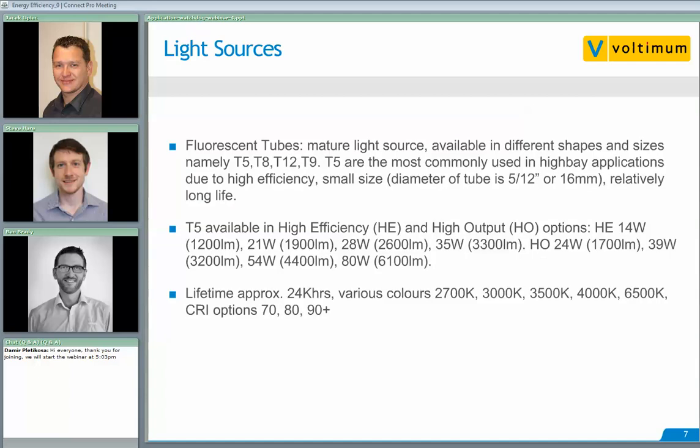The next light source is fluorescent tubes — also a mature light source available in different shapes and sizes, mainly T5, T8, T12, and T9 circular types. T5 are the most commonly used in high bay applications due to their high efficiency, relatively small size — diameter of about 16mm — and relatively long life. T5 are available in high efficiency (HE) and high output (HO) versions, ranging from 14 watts through to 35 watts for HE, and 24 watts to 80 watts for HO, where 80 watts gives about 6,100 lumens. Typical lifetime is about 24,000 hours.